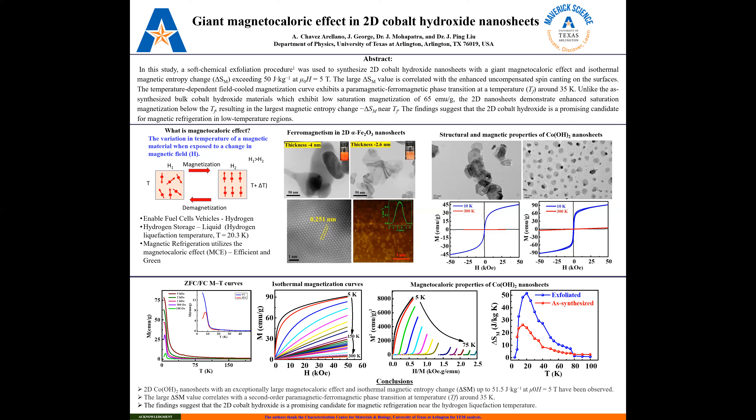To the right, we have the ferromagnetism in 2D alpha iron oxide nanosheets, and the difference between these two samples is the thickness. We took the sample, heated it in the liquid phase, continued with exfoliation, and produced the nanosheets. We observed that the thickness changed the magnitude of magnetization, favoring the smaller, less thick sample.